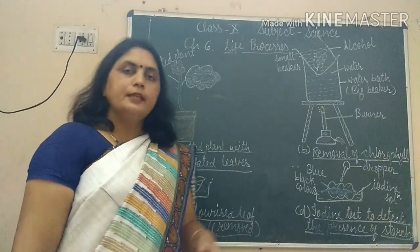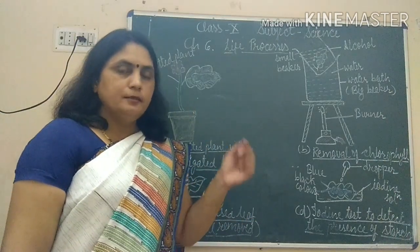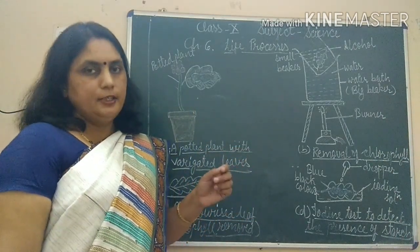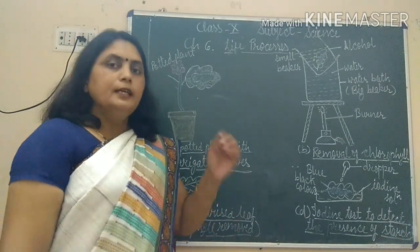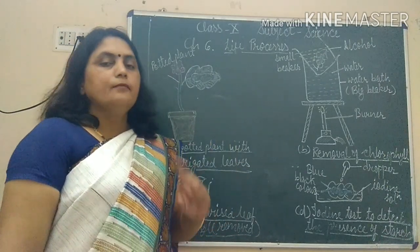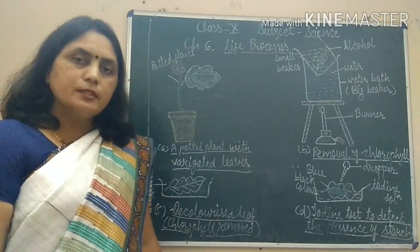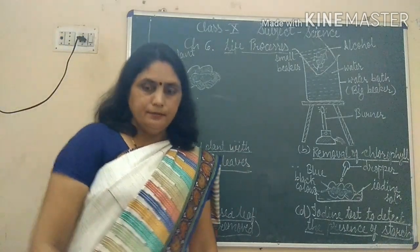With the help of these experiments we have proved which things are essential for photosynthesis. All four are so essential that if any one of them is missing, photosynthesis cannot take place.